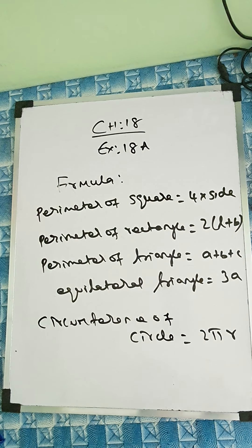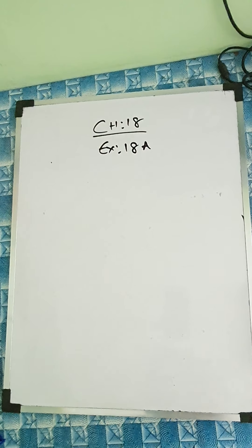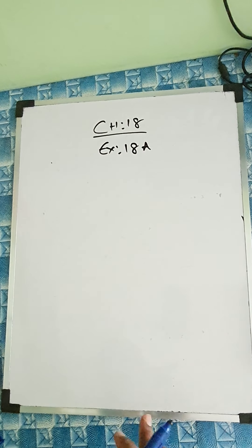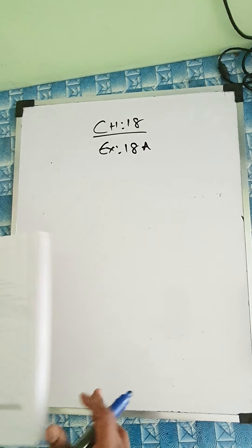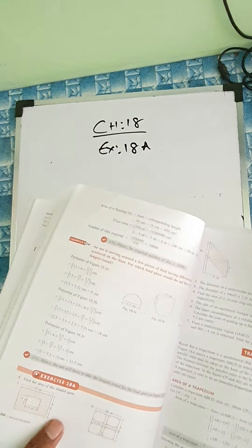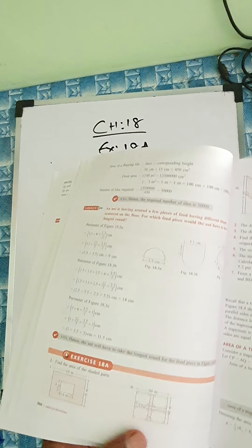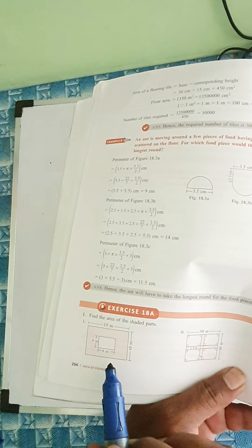Mainly I'm giving the formulas for this exercise only, and for the next exercise I'll give the next formulas. Now this is the first question of Exercise 18A: find the area of the shaded portion.